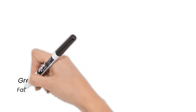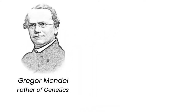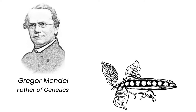Mendel is considered the father of genetics. He worked with garden pea plants, as they have seven main characteristics and were simple to cross-pollinate and grow new generations.